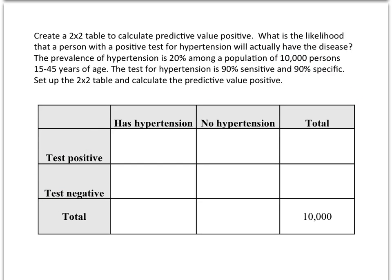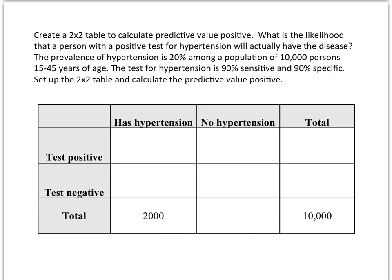Now that we have this in place, we then take the prevalence in the population times the 10,000 and calculate the percent with hypertension which is 2,000. We then do the subtraction to find out the number of people here which would be 8,000.